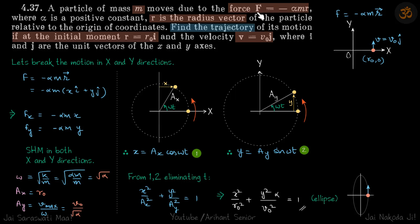A particle is moved by a force that is minus alpha m r, so this is the r vector. This is the force as given. Initially the particle is at r0, 0 and its velocity is v0 j cap. We need to find the trajectory of the particle.